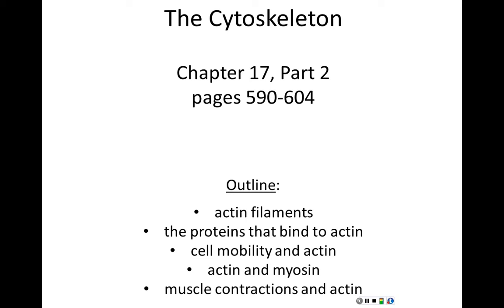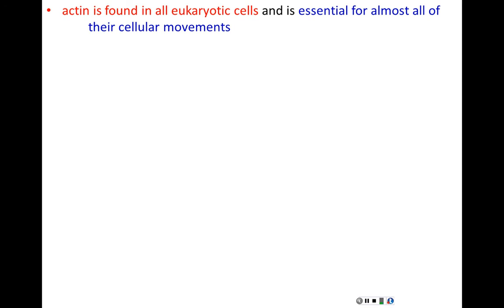Actin is the third and smallest of the three components of the cytoskeleton. Actin is found in all eukaryotic cells, and if a cell moves it's due to actin. Actin is responsible for almost every single cellular movement — the movement of a single cell. Without actin, cells could not move.